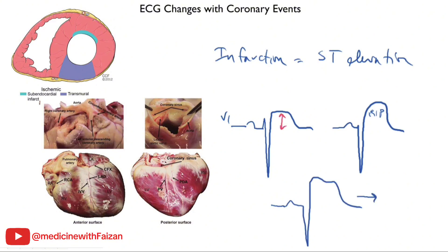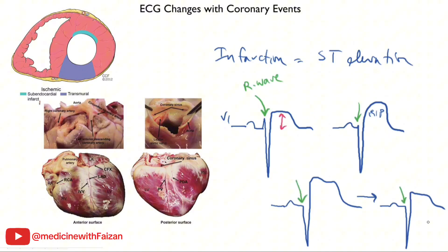Eventually the infarcted region becomes electrically silent. Over the course of several days, the ST segments come down. Whatever electrical activity was heading towards the interior wall was represented by the R wave. With infarction, the R wave is lost and you wind up with a Q wave. Eventually the ST segments become isoelectric, but you are left with a QS pattern which tells you there are now no electrical signals in that region — all electrical activity is headed away from the interior wall.